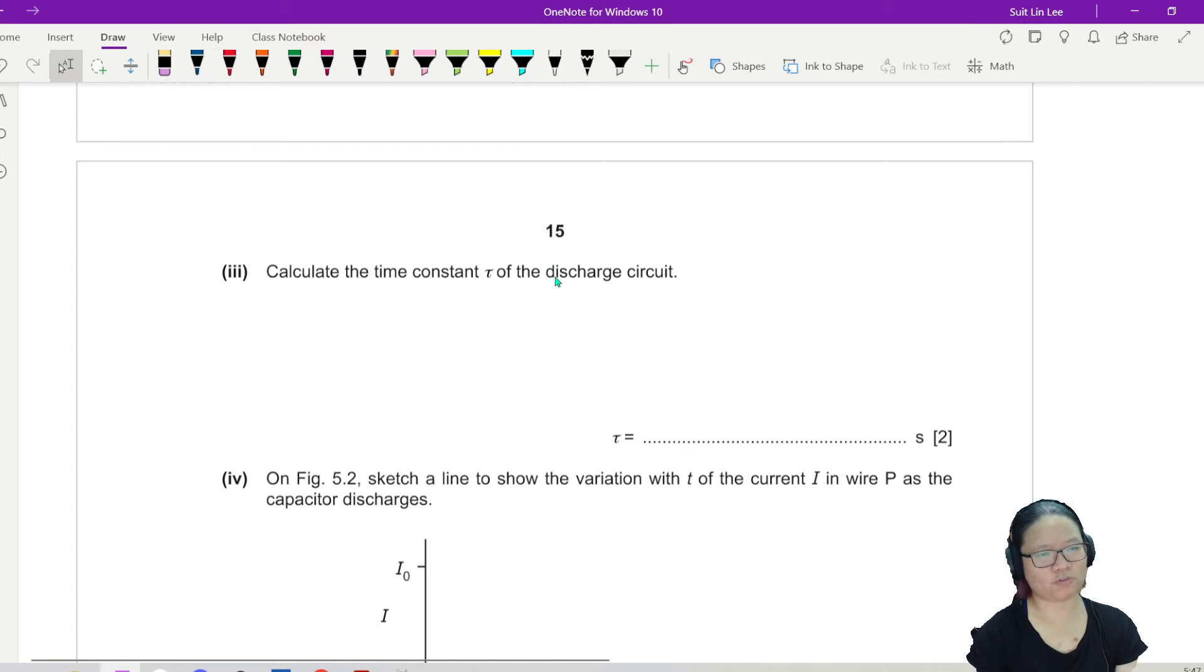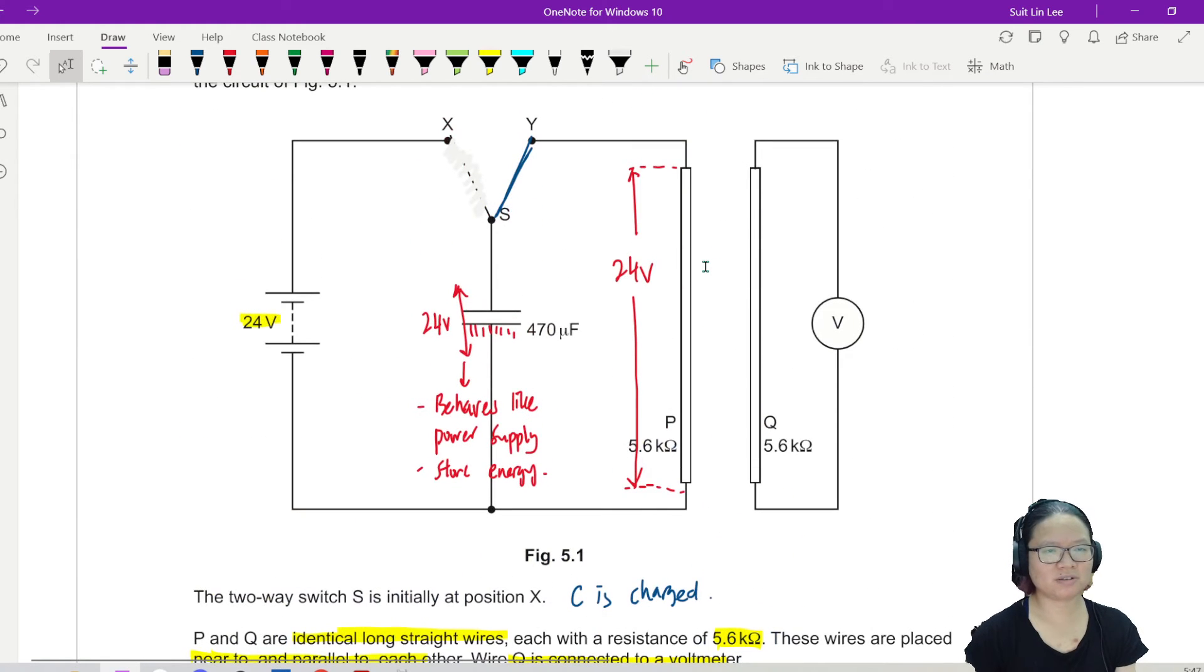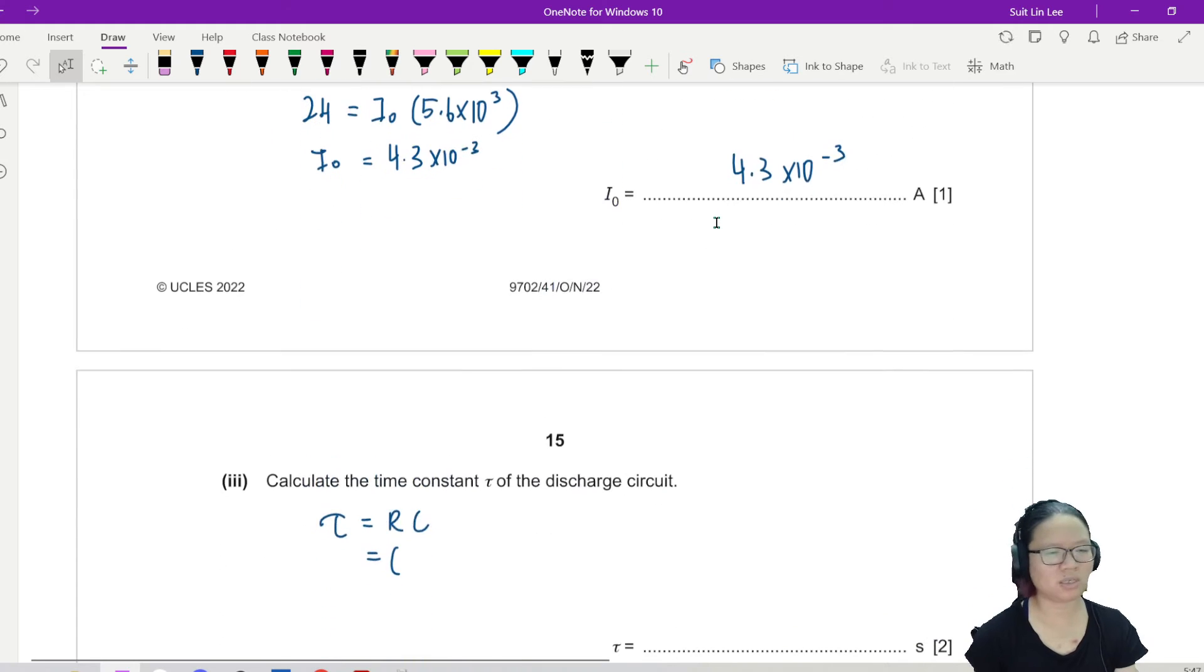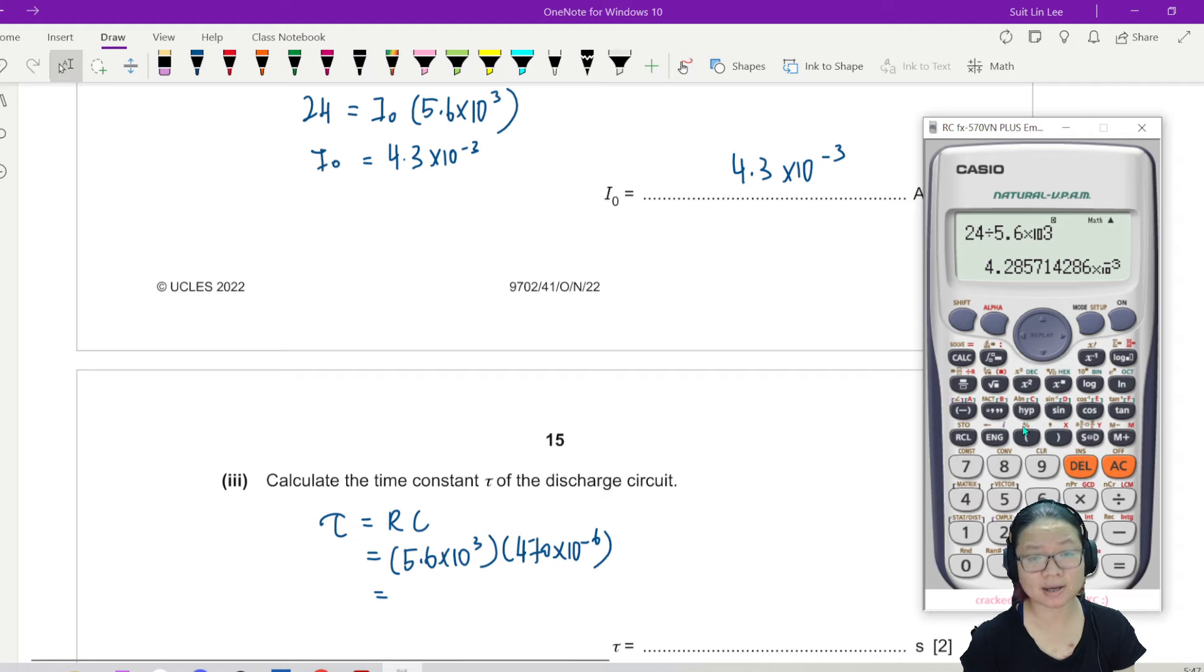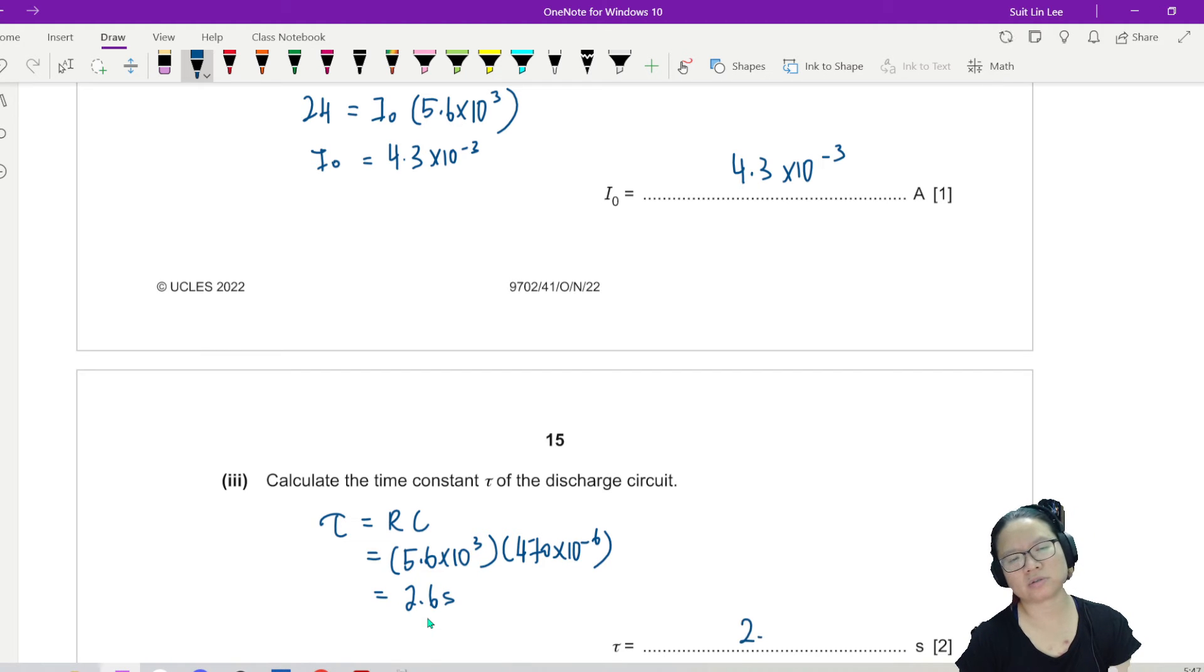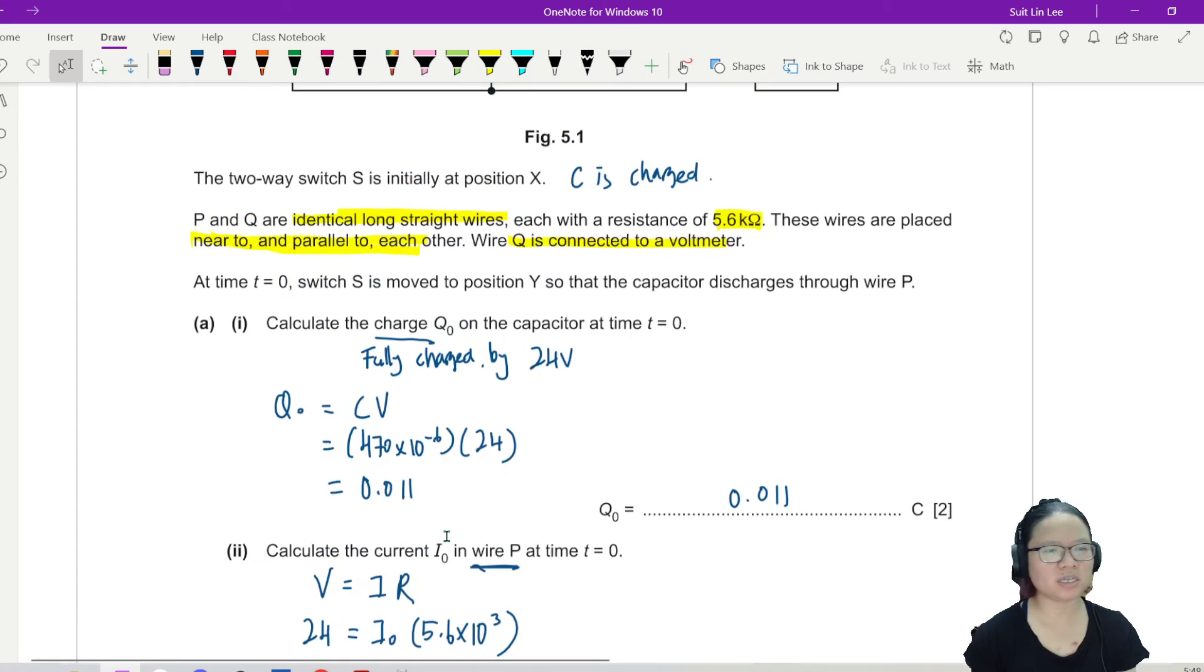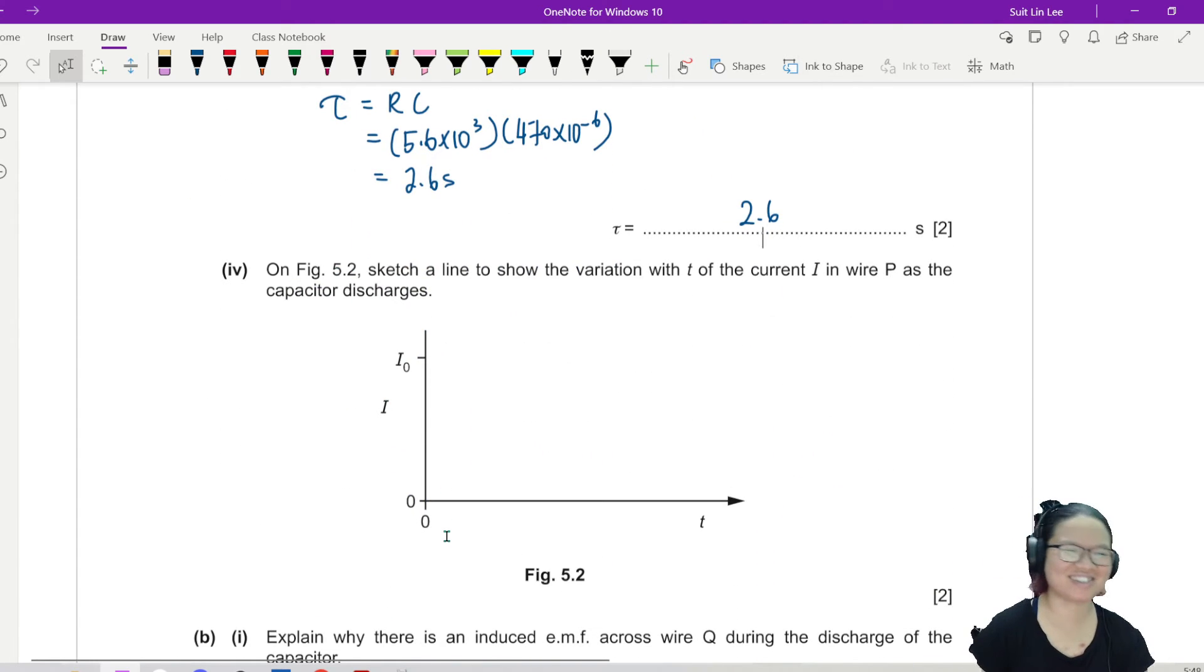Calculate the time constant tau of the charging circuit. So hopefully you remember time constant is RC. This is R, this is C. I just multiply. 5.6 times 10 to the power of 3 times 470 times 10 to the power of negative 6. Just remember the prefix, put the prefix up. So 470 times 10 to the power of negative 6... Got 2.6, 2.63, 2.66 seconds. Nice. That'd be easy, huh, compared to the major 2022 H2 case.